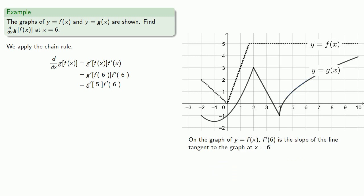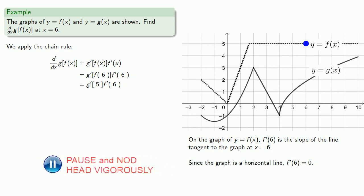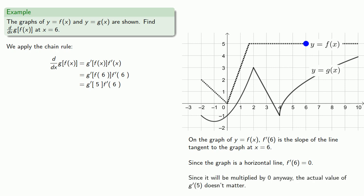On the graph of y equals f of x, f prime of 6 is the slope of the line tangent to the graph at x equals 6. Since the graph is a horizontal line at that point, f prime of 6 is going to be 0. And since it will be multiplied by 0 anyway, the actual value of g prime of 5 doesn't matter — positive something times 0 gives 0.